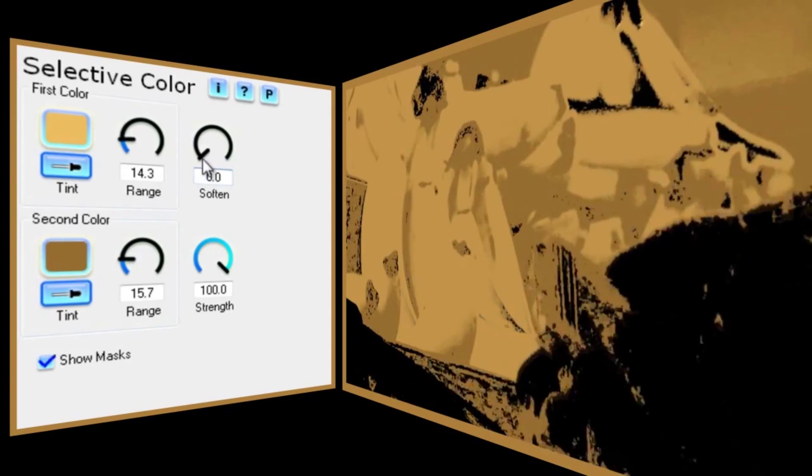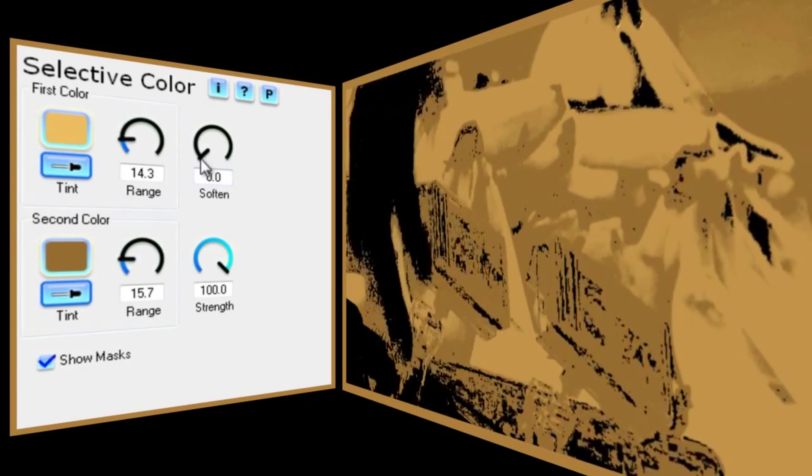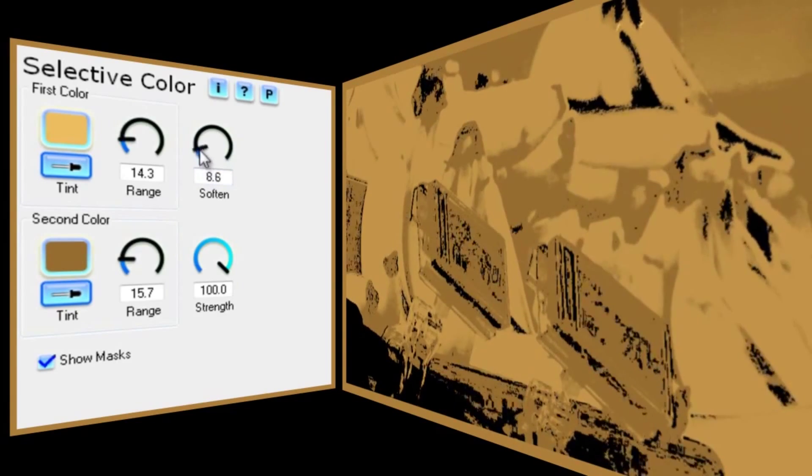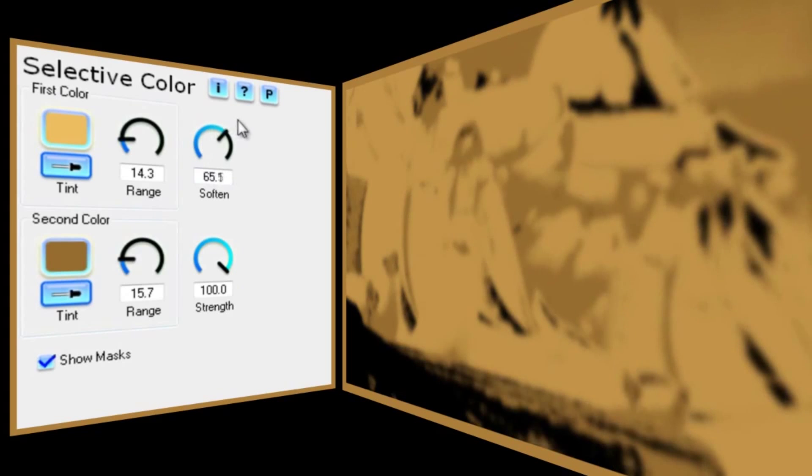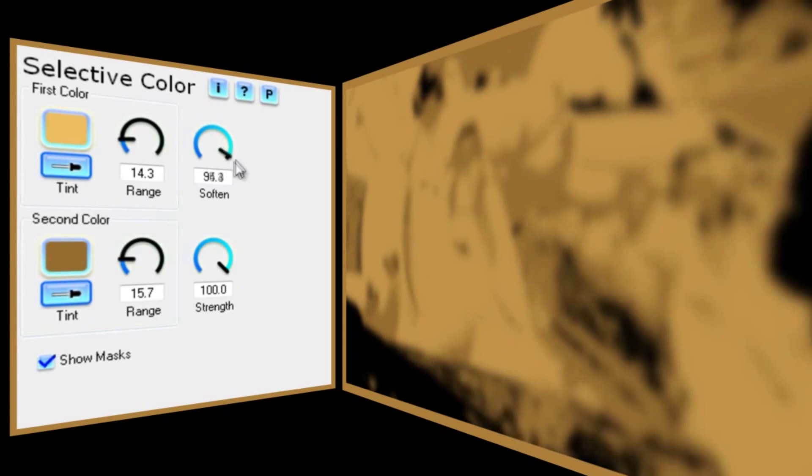Now this is where the Soften control helps. With Show Masks still activated, look what happens when I soften the mask. Much less unwanted color noise in the image.